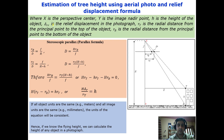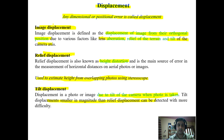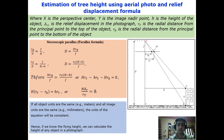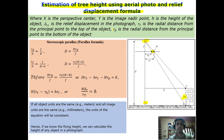Now let's see how relief displacements are used in the estimation of tree height or building height using the relief displacement formula. Here, x is the perspective center, y is the nadir point, h is the height of the building, and delta r is the relief displacement in the photograph — the distance between the two points shown.